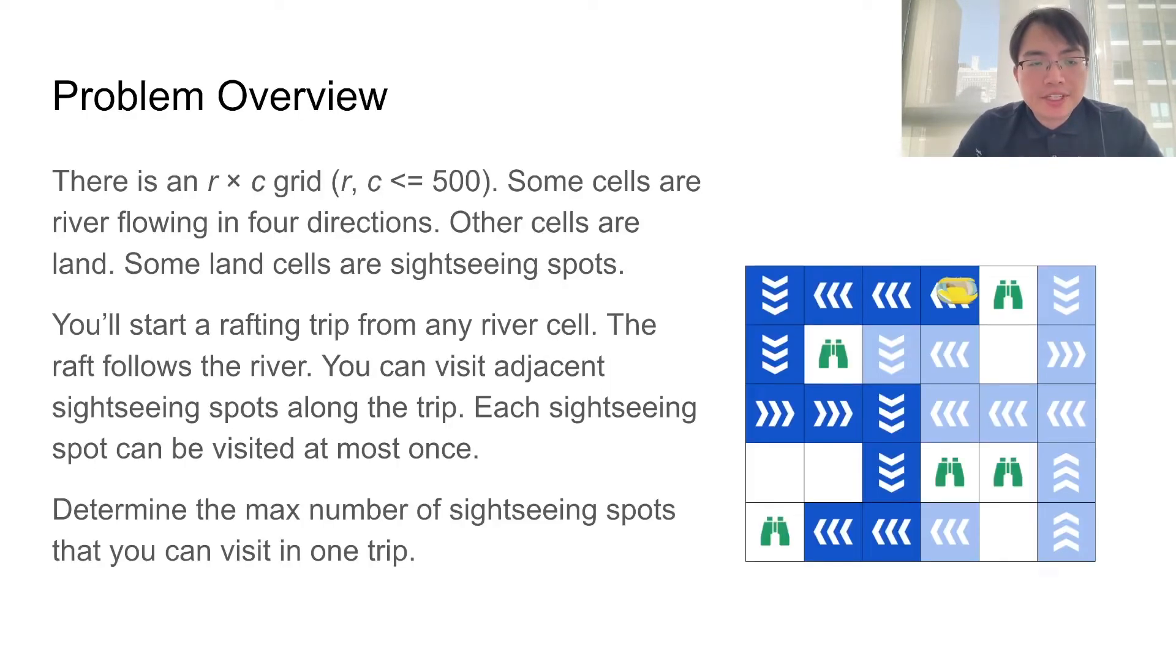In this problem, you are given an R times C grid that represents some rafting terrain. Each cell in the grid is either river flowing in one of the four directions or some land. Land cells may contain sightseeing spots.